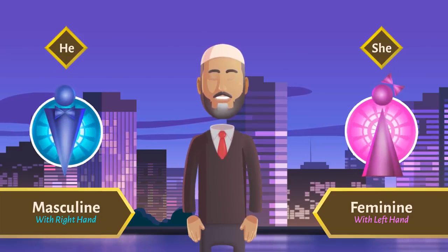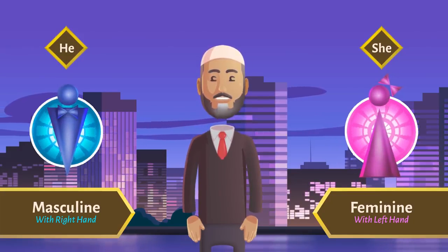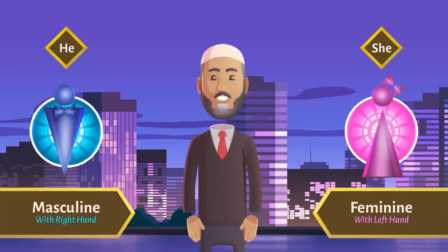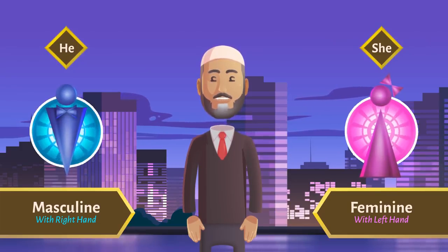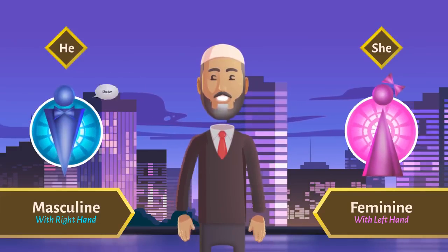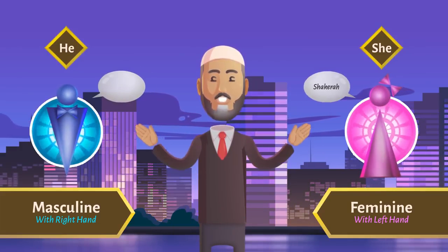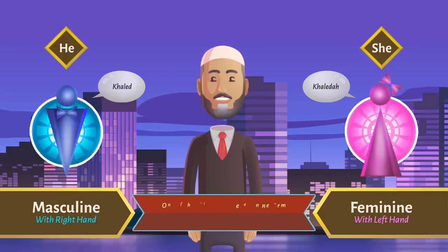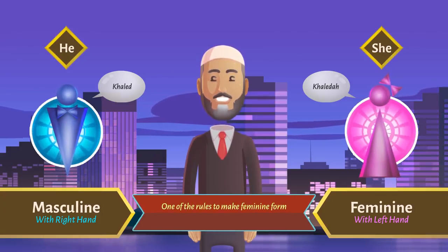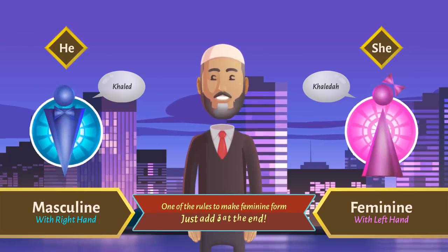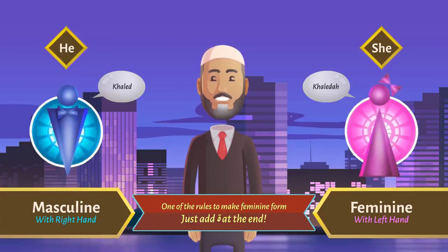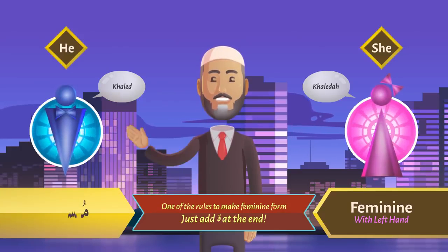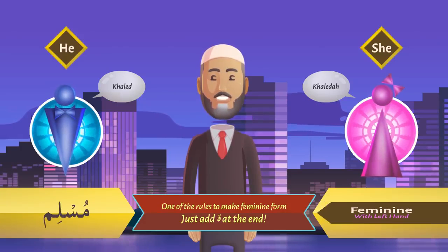Now let's take one of the rules to make feminine forms for a given noun. You must have heard so many Muslim names such as Shakir, Shakira, Abid, Abida, Khalid, Khalida — and there lies the rule: just add the round Ta (ة) at the end.